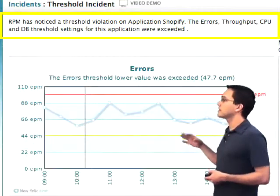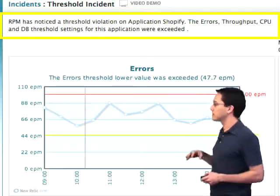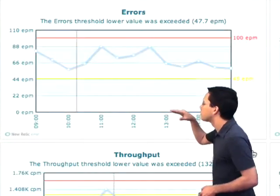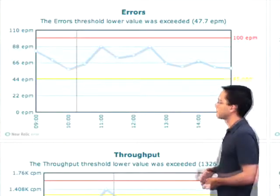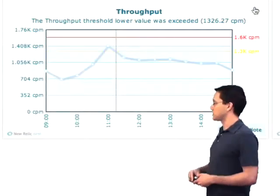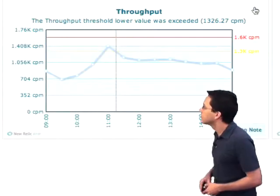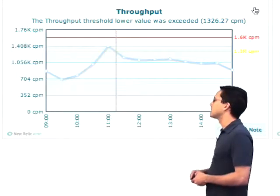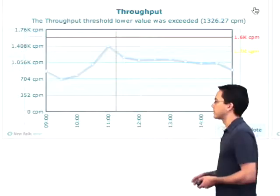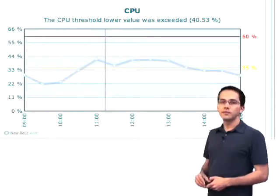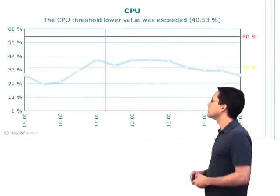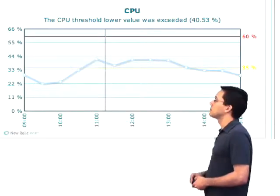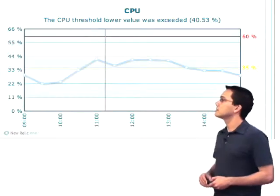This one is showing that a couple different things have exceeded the warning threshold. We can see that it has a threshold of 45 errors per minute before it's going to notify us. The next graph down is going to show us throughput, and it looks like at 11 o'clock we surpassed 1,300 calls per minute. Over here in the bottom right, we have a graph showing CPU, and it looks like between 11 o'clock and 2 o'clock we exceeded the CPU threshold.